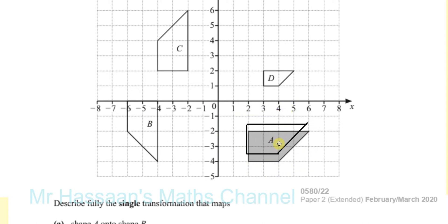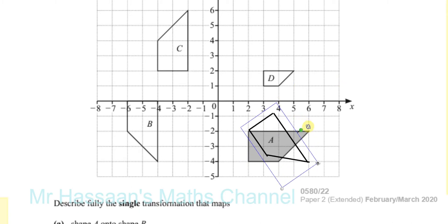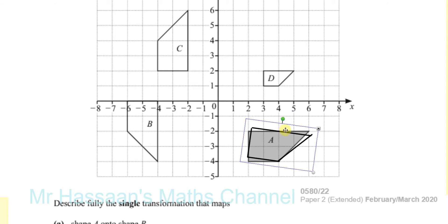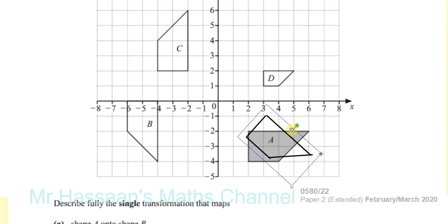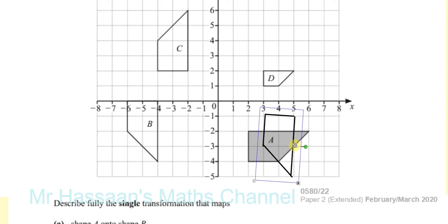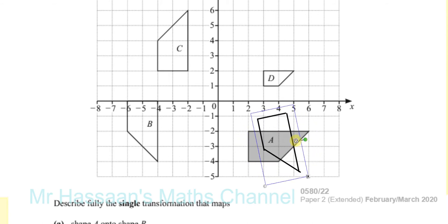Rotation is not just described by saying 'rotation' — you need to say the angle it's rotated through and the direction. We can tell the angle must be 90 degrees and it must be clockwise. Alternatively, that's 270 degrees anticlockwise — going 90, 180, 270 — but it's much easier to say 90 degrees clockwise.